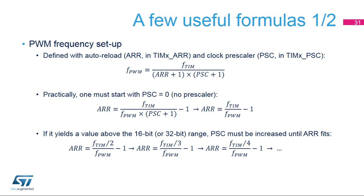The sequence involves trying an ARR value equal to the timer clock frequency divided by 2 over the PWM frequency, the whole minus 1; then divided by 3, the whole minus 1; and so on, up to the point where the ARR value fits within the programmable range.